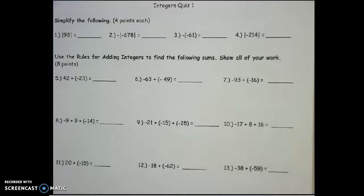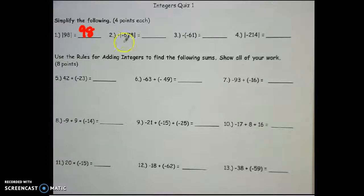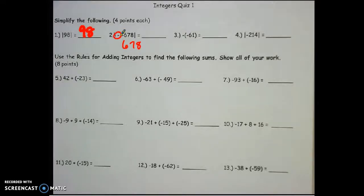So number 1, the absolute value of 98 is 98. Number 2 is a two-step problem. You have to figure out the absolute value of negative 678, which is positive 678. Then you have the opposite sign on the outside. You have to figure out what's the opposite of 678, which is negative 678.